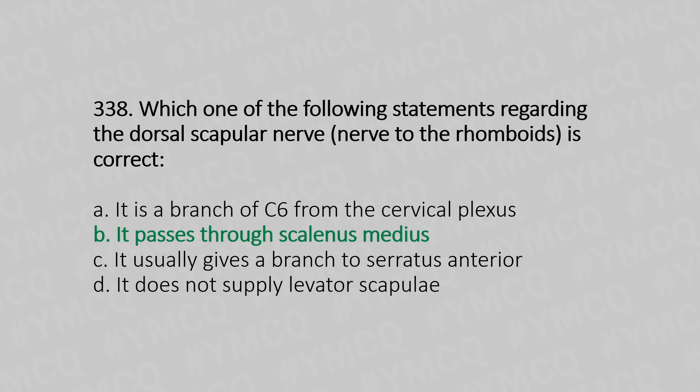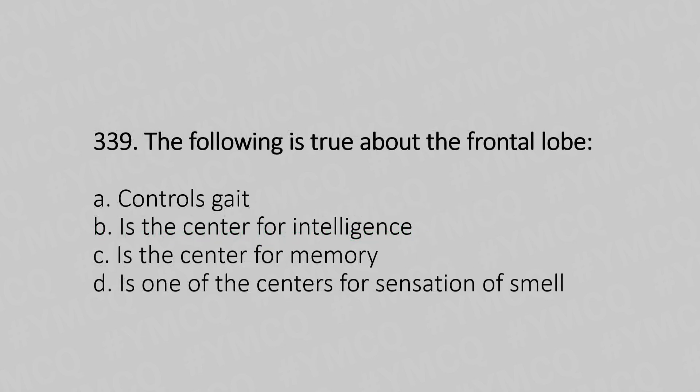Question number 339: Which of the following is true about the frontal lobe? Option A: controls gait. Option B: it is the center of intelligence. Option C: it is the center of memory. Option D: it is one of the centers for the sensation of smell. The answer is option B, it is the center of intelligence.